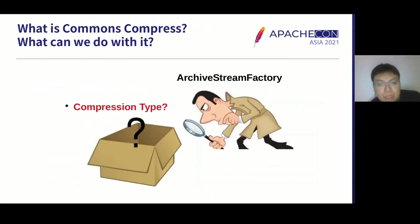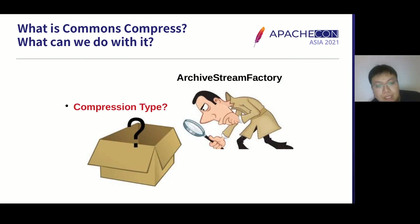Apache Commons Compress supports creating input streams and output streams corresponding to the compression type, with a type detector. The type detector can be used with the ArchiveStreamFactory. You can check ArchiveStreamFactory in Apache Commons for more details. Apache Commons Compress does not provide high-level APIs like 'extract all' or 'extract by field name' — this is by design. You can use Apache Commons VFS instead.